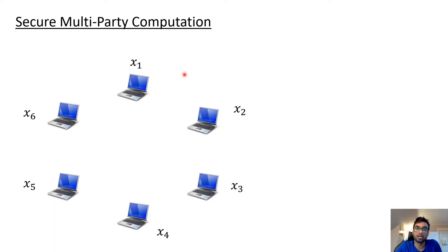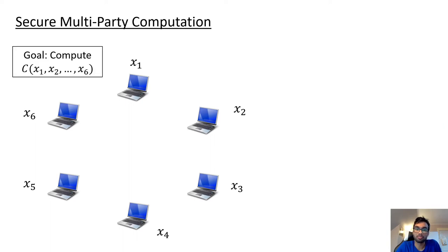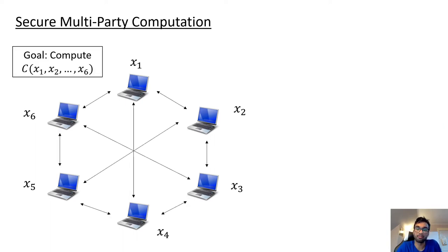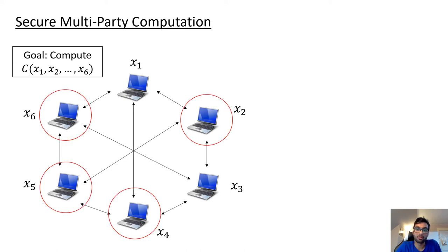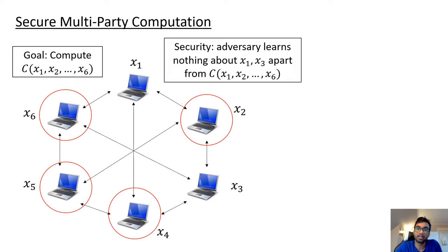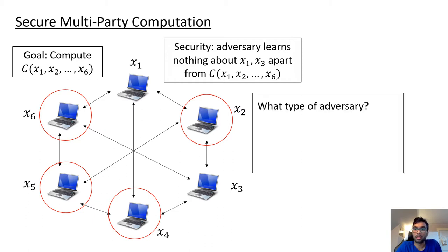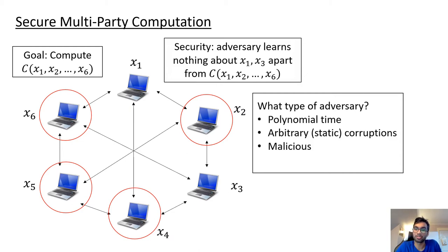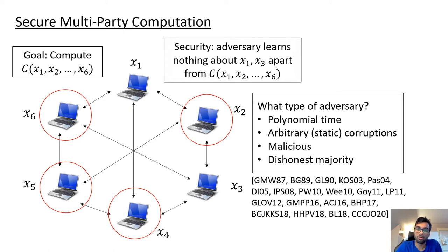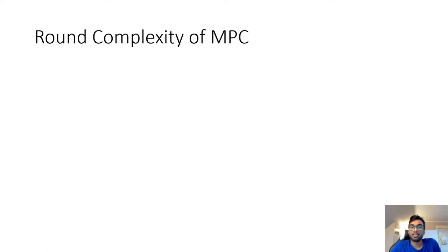Let me start by describing the setting of MPC. Here we have a bunch of parties, each with their private inputs, and their goal is to compute some function on their private inputs by interacting with each other. The adversary might corrupt some subset of these parties, and we want the security guarantee that the adversary should not learn anything about the honest parties' inputs apart from what it can learn from the output of the functionality. The type of adversary we are interested in is a polynomial-time adversary with arbitrary static corruptions, malicious behavior, and dishonest majority. In this paper we are mainly focused on the round complexity of MPC.